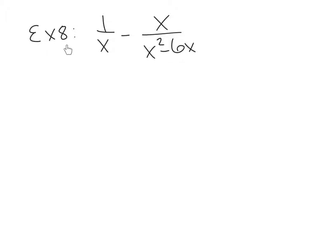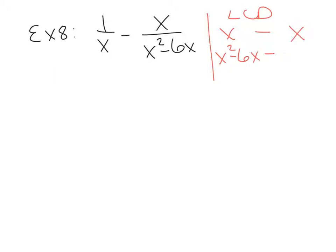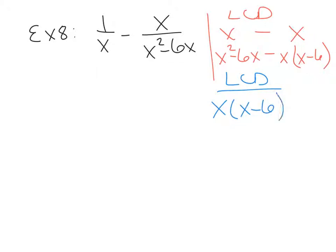Example 8 is on the top of page 153: 1 over x minus x over x squared minus 6x. We need to find the common denominator first. We're going to list our two denominators and break them down to prime factors. The prime factor of x is just x. x squared minus 6x has a GCF of x, so when I factor it out I have x times x minus 6. For the common denominator, take the whole first list — I already have the x, so I just need to add on x minus 6. That will be my common denominator.